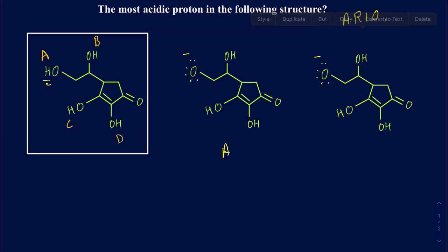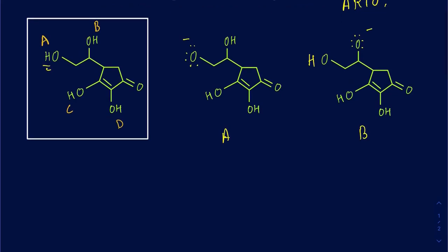So that's going to be for B. Make sure when you're doing this for B, you're losing proton B, not proton A — so you're still going to have a proton here, and this oxygen will get the negative charge. That would be the conjugate base after losing proton B. We want to do the same thing for C and D.